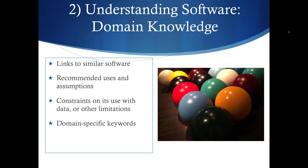The second category is about understanding the software. You may specify uses and assumptions — what the software is for, what it assumes about the data — along with constraints and limitations. You can include domain-specific keywords, be very specific about the type of analysis. You may also want to link your software with similar software, noting for example that yours is in R instead of MATLAB.